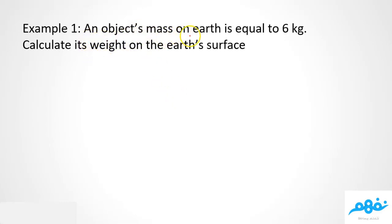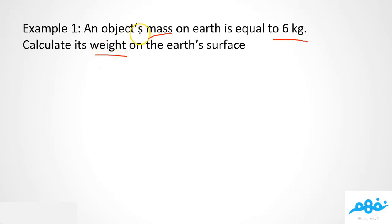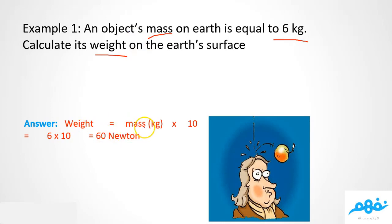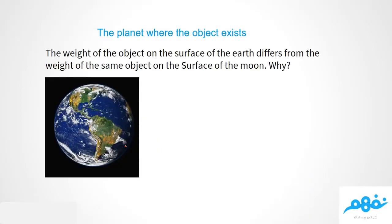Here is an example: an object has a mass of 6 kilograms on Earth. Calculate its weight on Earth. We know that weight equals mass times 10, so: weight = 6 × 10 = 60 Newtons. Don't forget to include the unit Newton, because we measure weight in Newtons.